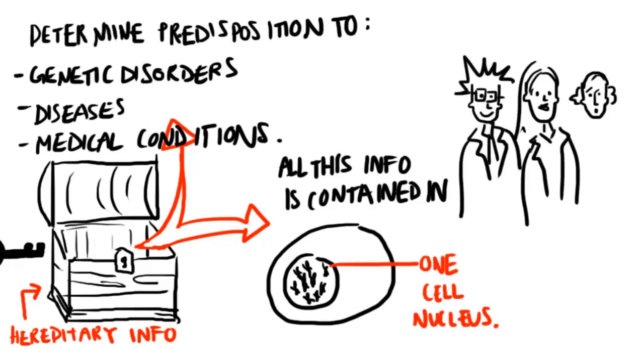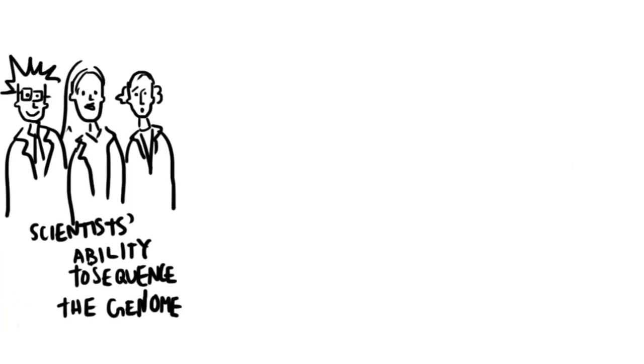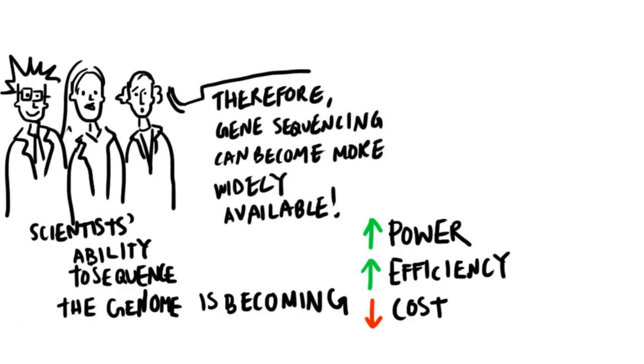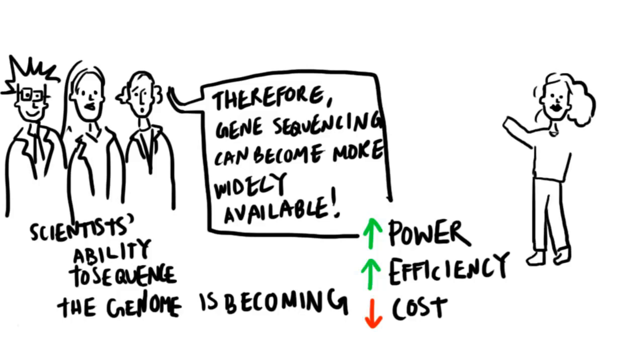Scientists' ability to sequence the human genome is constantly becoming more powerful, more efficient, and less costly. That means that gene sequencing technology is more widely available. One possibility is allowing future parents to screen their genetic information before having a child.